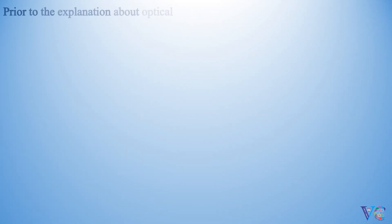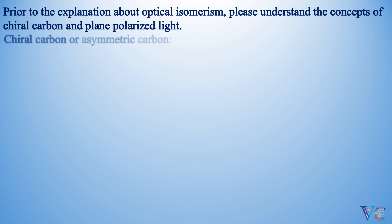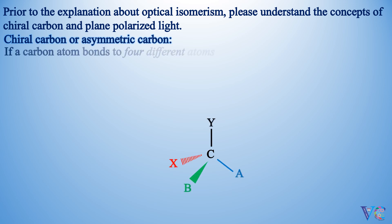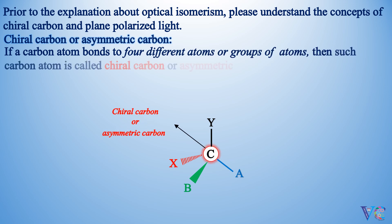Prior to the explanation about optical isomerism, please understand the concepts of chiral carbon and plane polarized light. If a carbon atom bonds to four different atoms or groups of atoms, then such a carbon atom is called a chiral carbon or asymmetric carbon.